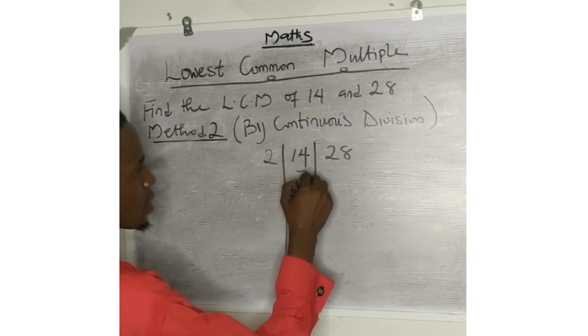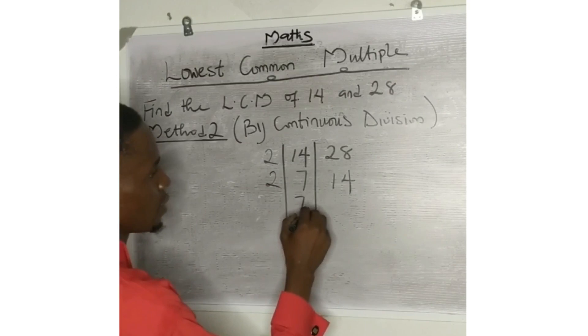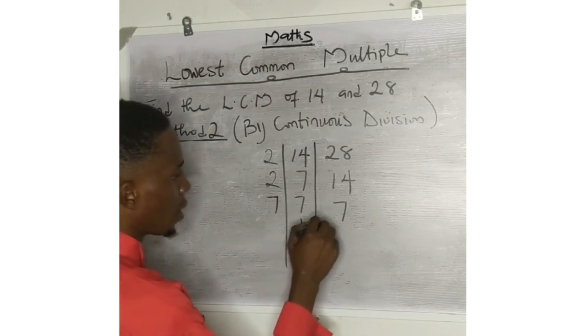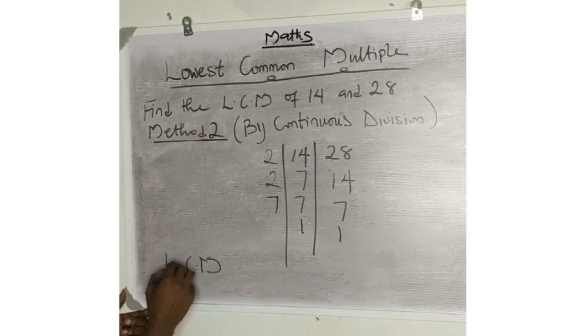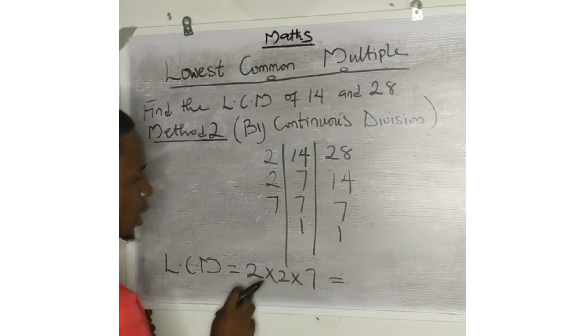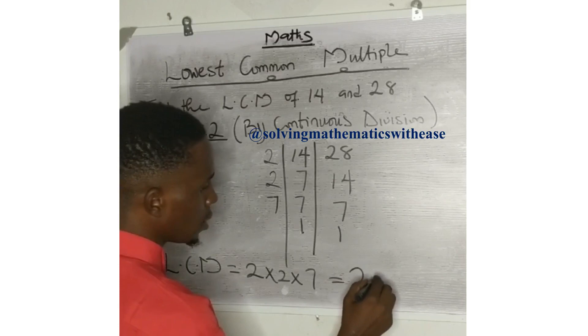two divides into 14 to give us seven, and two divides into 28 to give us 14. Two divides into 14 to give us seven. What again can divide? Seven. Seven goes into seven to give one, one. So, the LCM is going to be two times two times seven. Two times two is four. Four times seven is 28.